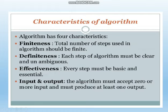The next topic is characteristics of algorithm. What are the characteristics of algorithm? These are the things an algorithm must have. The first characteristic is finiteness. The total number of steps used in the algorithm should be finite — meaning the steps we write for solving the problem should be limited, not infinite. Limitation is the most important thing in writing an algorithm.